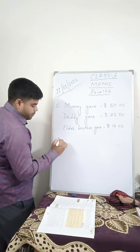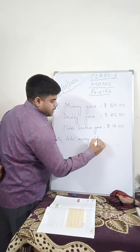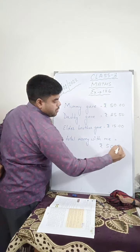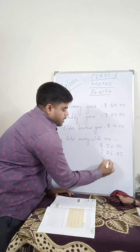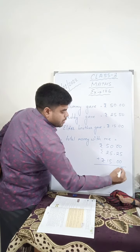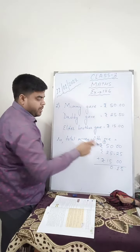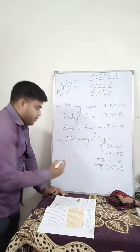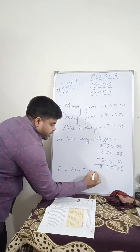I have to add to get the total amount. Total money with me is equal to Rs. 50 plus Rs. 25.50 plus Rs. 15. Arrange properly and add. 5 plus 5 is 10, carry 1. 1 plus 5 is 6, 6 plus 2 is 8, 8 plus 1 is 9. Therefore, I have Rs. 90.50 altogether.